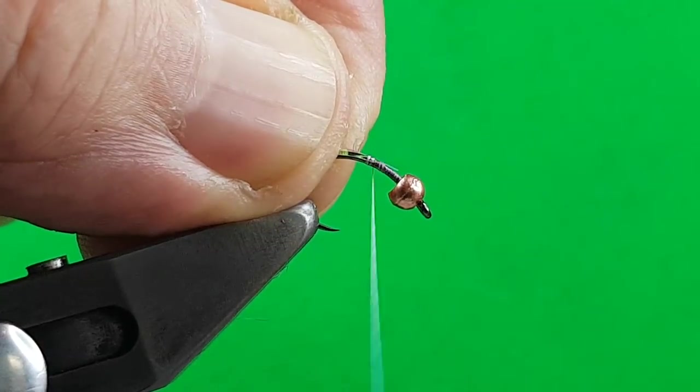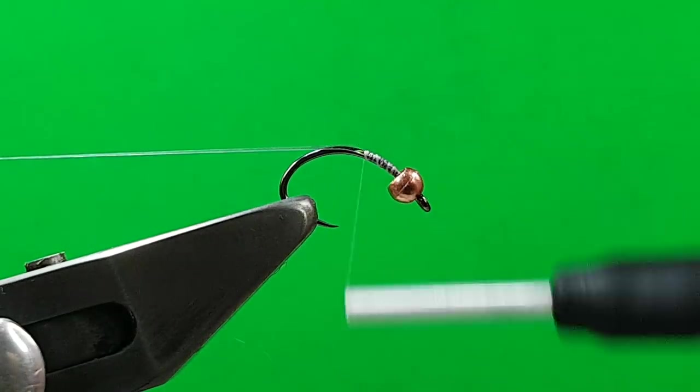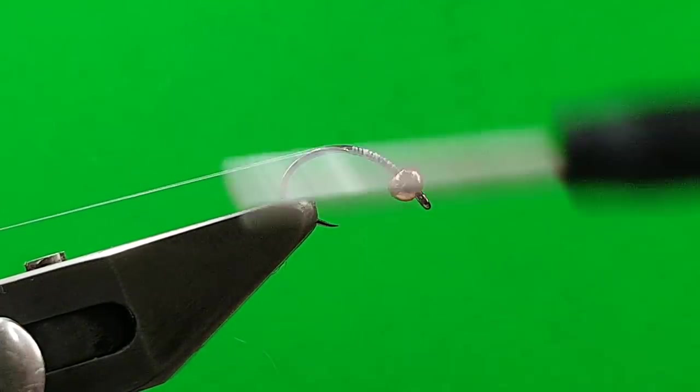I use the 16 as a rib on my grayling slayer. You could vary this: red, black, pheasant tail.